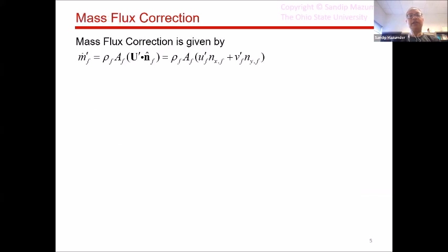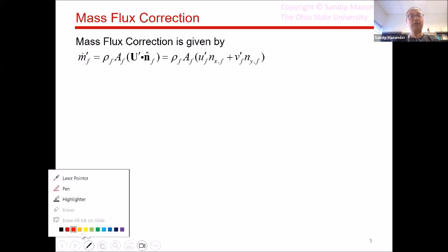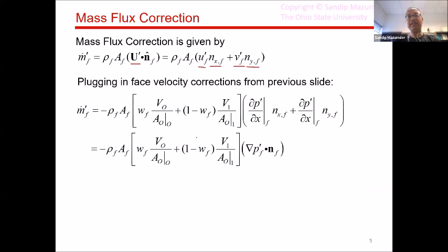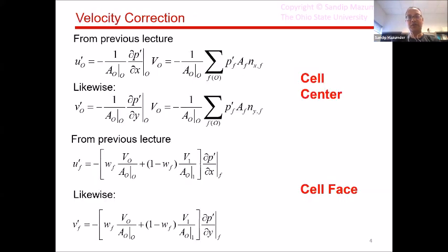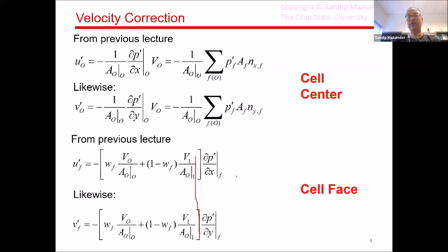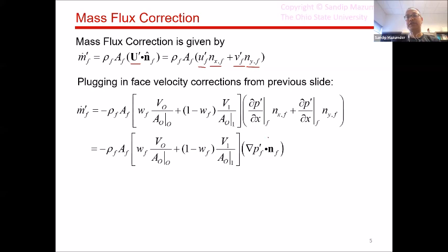Now, how do we do that? Well, this is our expression for the mass flux correction. Notice that here we are simply using a velocity correction rather than a velocity. And so here we have u velocity correction times nx plus v velocity correction times ny. And then once we plug in the expressions from the previous slide, which are these two at the bottom, you get these expressions. Notice that what we end up getting is dp/dx times nx. There's a typo here. This should be dp/dy times ny.